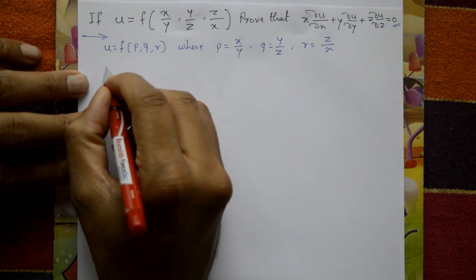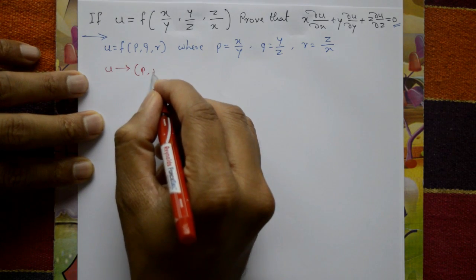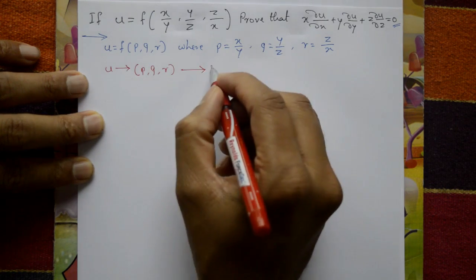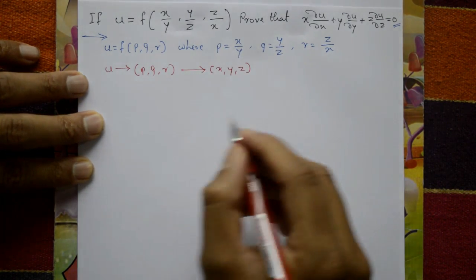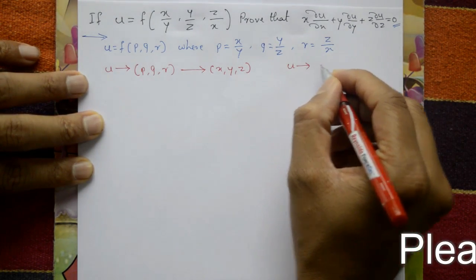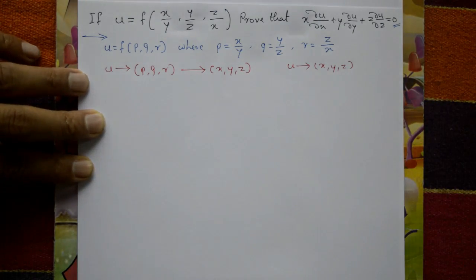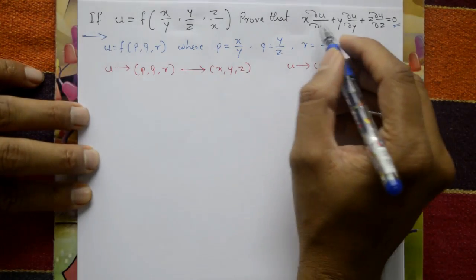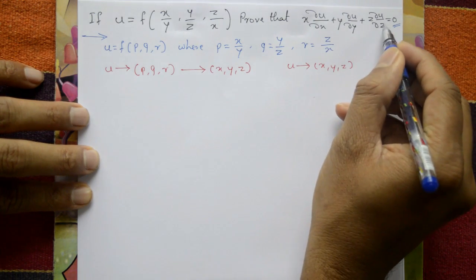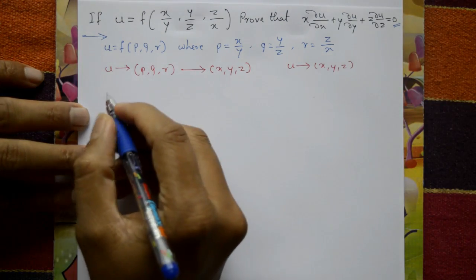Now, u is a function of p, q, r, and p, q, r are functions of x, y, z. That means u is a function of x, y, z — it is a composite function. We need to find ∂u/∂x, ∂u/∂y, ∂u/∂z, multiply the first equation by x, second by y, third by z, add them to get 0.